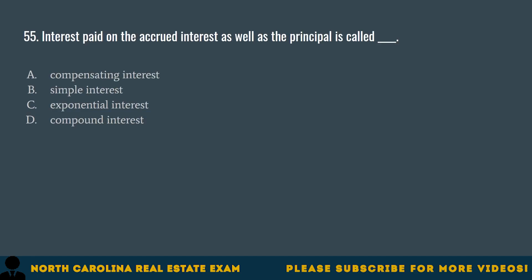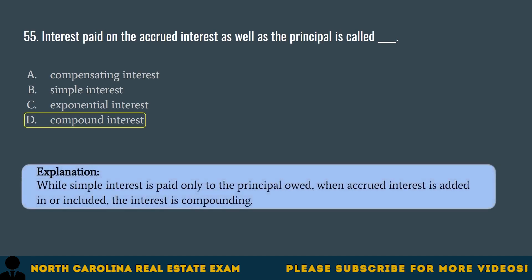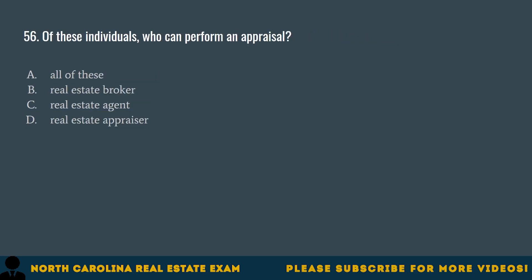Question 55. Interest paid on the accrued interest as well as the principal is called A. Compensating interest. B. Simple interest. C. Exponential interest. D. Compound interest. The correct answer is D. Compound interest. While simple interest is paid only to the principal owed, when accrued interest is added in or included, the interest is compounding.